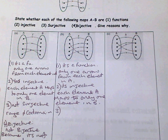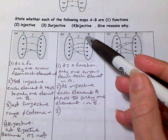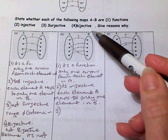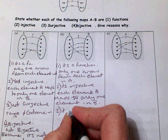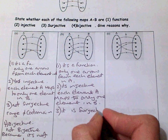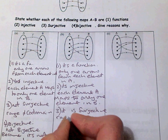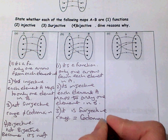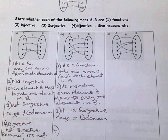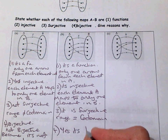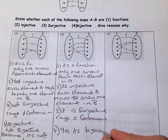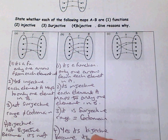Three: is it surjective? With surjective, remember the range and the co-domain must be equal. It is surjective — the range is equal to the co-domain. And number four: is it bijective? Yes, it is bijective because it's both injective and surjective.